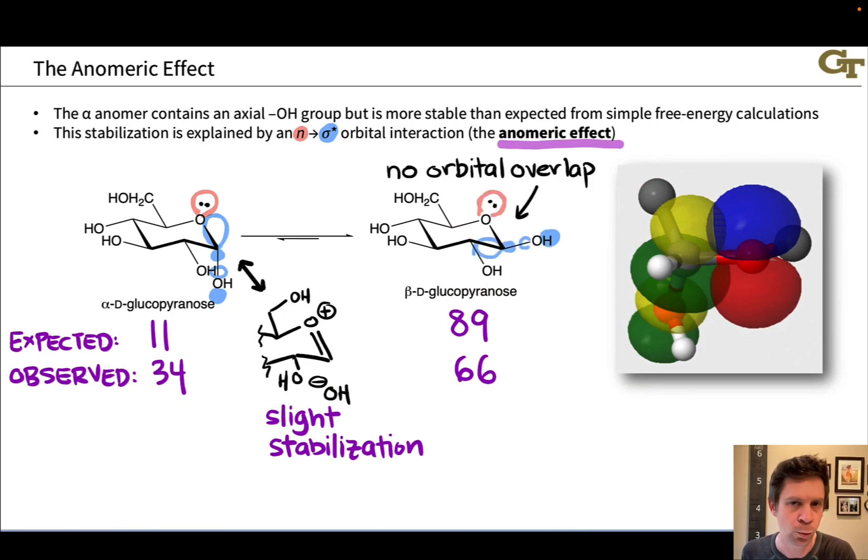Now, what about the beta anomer? Well, if we draw the same orbitals aligned as they should be, for example, if we make sure to draw that sigma star orbital coaxial with the equatorial CO bond, now there's no good orbital overlap because the axial lone pair is kind of in this direction and the largest lobe of that sigma star orbital is now over here. So they're pretty much at right angles to each other, very close to right angles to each other in the equatorial conformer. And so there's no good orbital overlap. There's no anomeric effect in the beta anomer. So it doesn't benefit from the stabilization in the same way that the alpha anomer does. That's the anomeric effect in action.